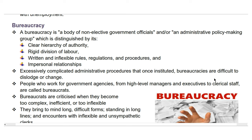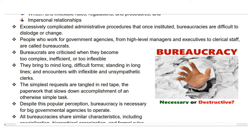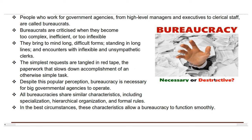Let us move on to bureaucracy. Bureaucracy is a system of government or organization characterized by hierarchical structure, complex rules and procedures, and often associated with slow decision-making and administrative inefficiency. Excessively complicated administrative procedures, once instituted, make bureaucracies difficult to dislodge or change. People who work for government agencies, from high-level managers and executives to clerical staff, are called bureaucrats. Bureaucrats are criticized when they become too complex, inefficient, or too inflexible, bringing to mind long difficult forms, standing in long lines, and encounters with inflexible and unsympathetic clerks.